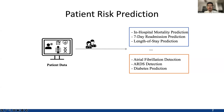For instance, it can be medical event prediction tasks such as in-hospital mortality prediction, or it can be disease detection tasks such as atrial fibrillation detection. In summary, patient risk prediction is crucial since it enables healthcare providers to proactively identify and address potential health risks.